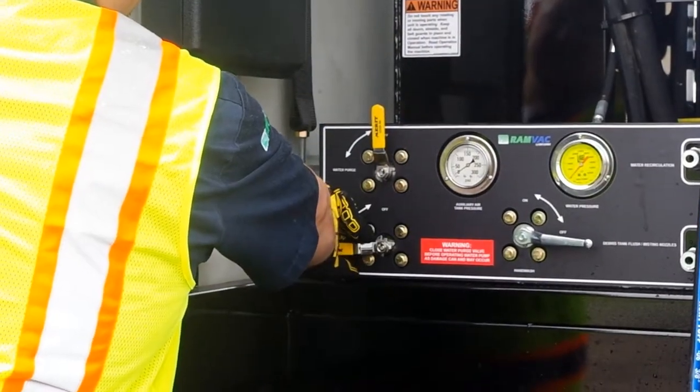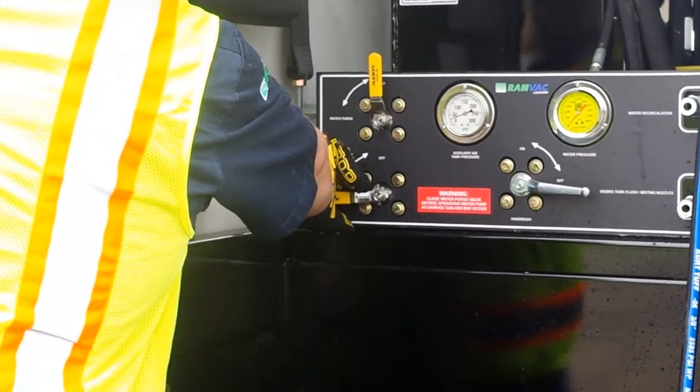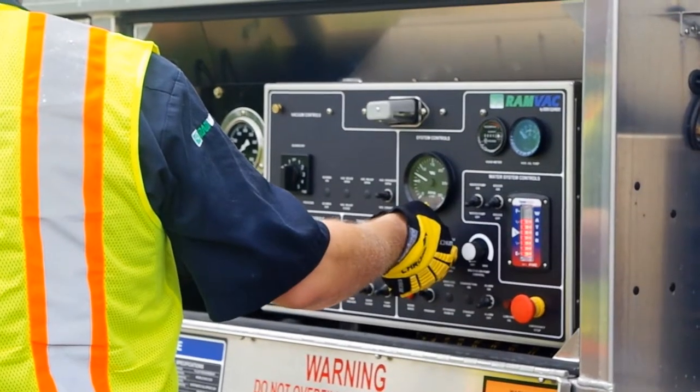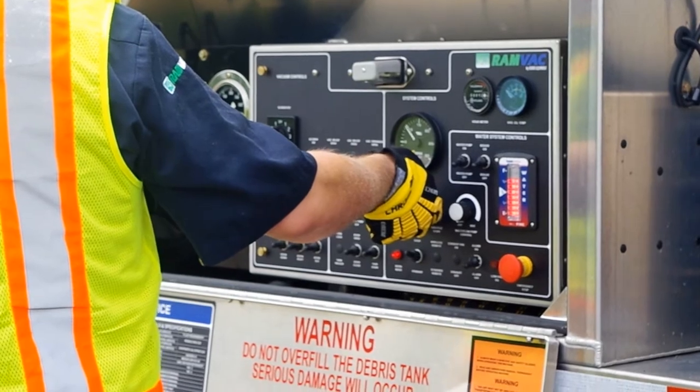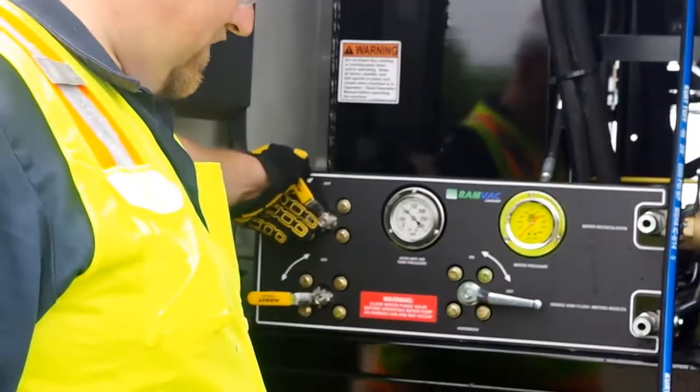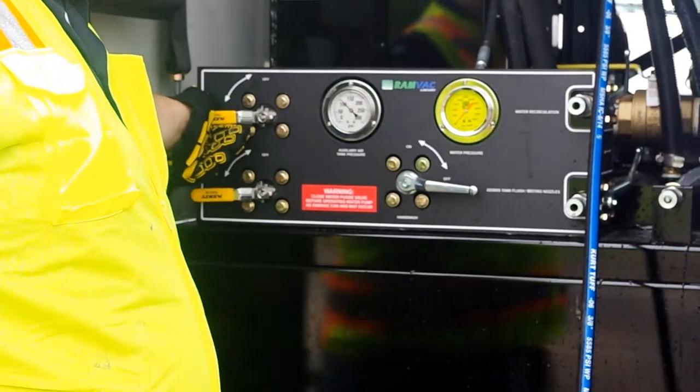To begin the winterization process, the operator will want to build air pressure in the blowdown auxiliary air tank. To help the system keep up with the air flow needed to purge the system with water, the operator can always throttle up the truck chassis.